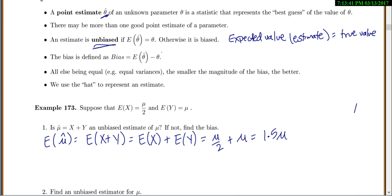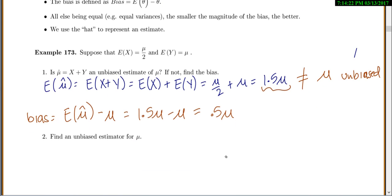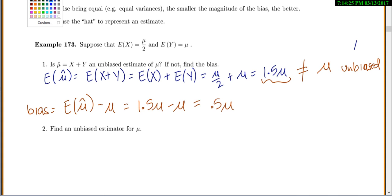But what were we trying to estimate? We were trying to estimate mu. This is not equal to mu, that's 1.5 mu. So this is biased. And if you actually want to calculate the bias, the formula for bias is you take what are you going to expect to get from your estimate and minus what the true value should be. So our expected value we found is 1.5 mu, and we want to minus mu, so we get 0.5 mu would be your actual bias.